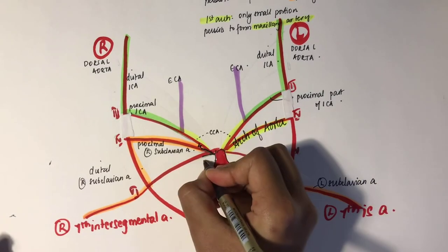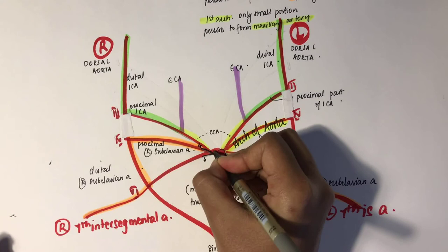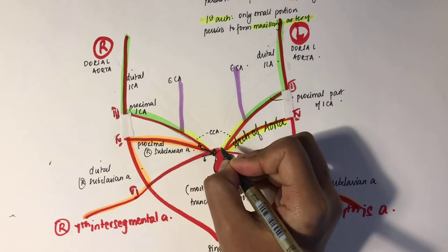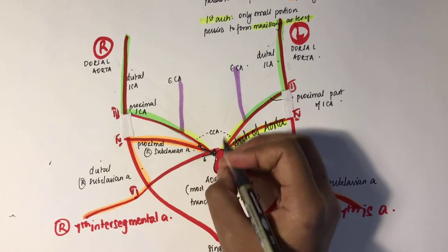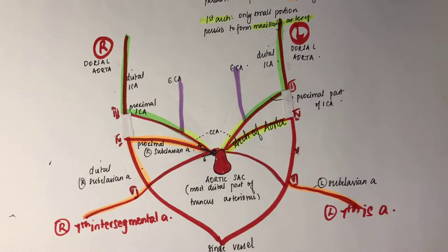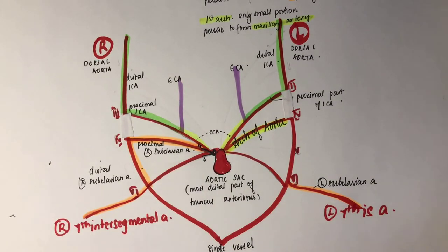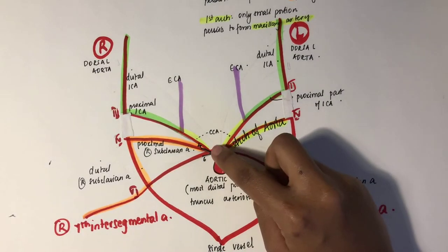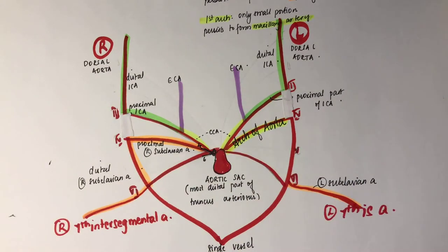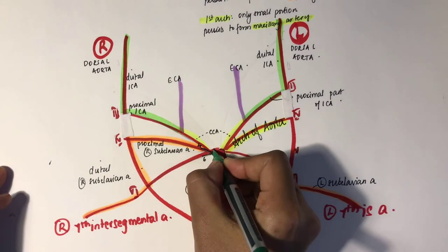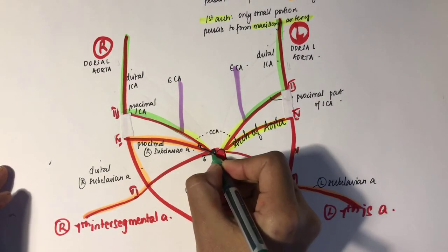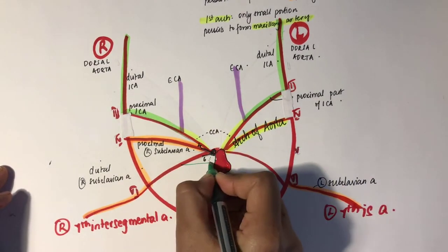The short portion of the ventral aorta between the fourth and sixth aortic arch — visible as a small black patch here — forms the brachiocephalic trunk.